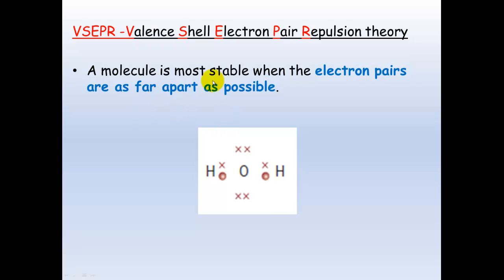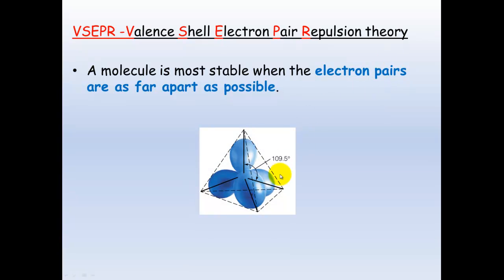This is when a molecule will be most stable, and this makes sense because electrons are negatively charged and will repel one another. A model looks something like this, and this is just one example. If you imagined you had four balloons tied together and these balloons were negatively charged, they would move apart from each other.